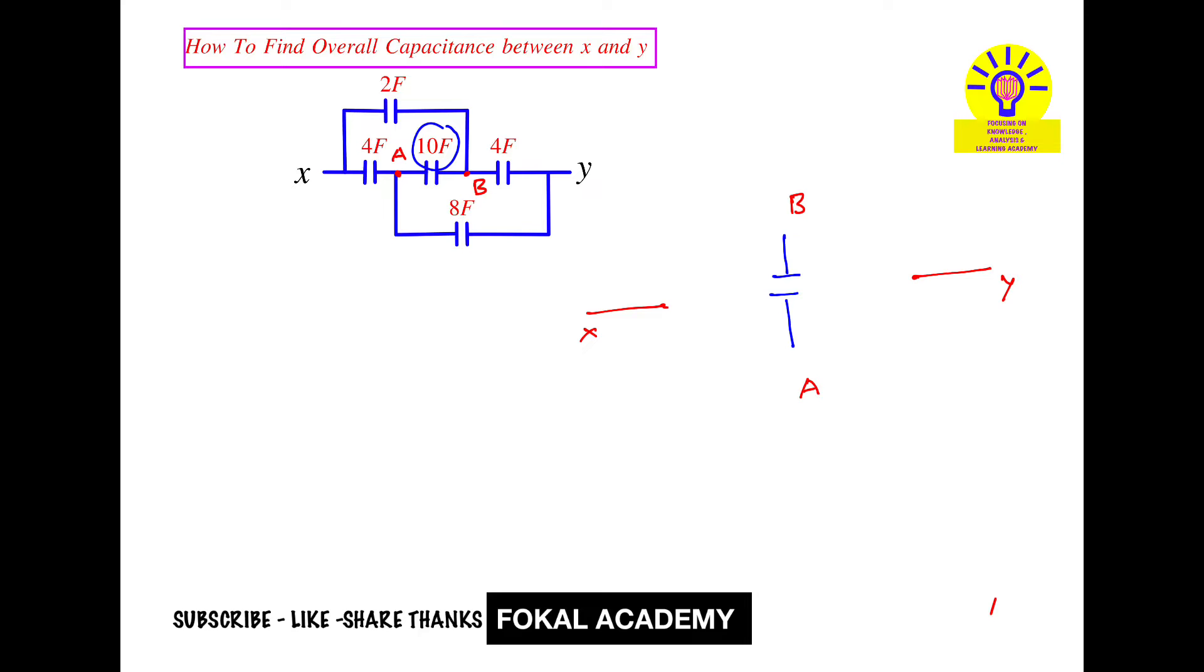Now between B node and X node, we have only one capacitor that is 2 Faraday capacitor. So 2 Faraday is connected to X and B. So between B and X, we have 2 Faraday capacitor.